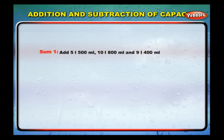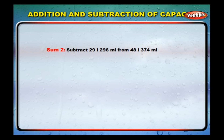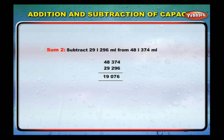Add 5 liters 500 mL, 10 liters 800 mL, and 9 liters 400 mL. We get 25 liters and 700 milliliters. Subtract 29 liters 296 milliliters from 48 liters 374 milliliters. Arrange them in columns: 48 L 374 mL minus 29 L 296 mL. We get 19 liters and 76 milliliters.